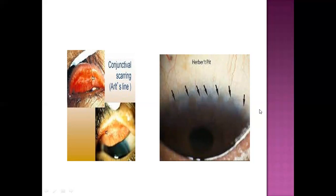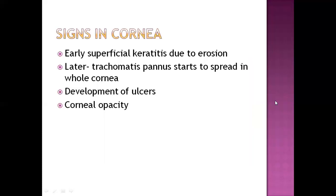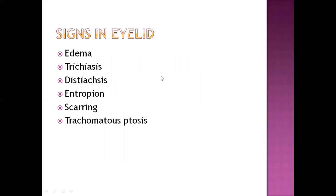Herbert's pits are small holes or pits visible on the limbus, and along with Arlt's line, they are characteristic features of trachoma. Signs in the cornea specifically: the cornea, conjunctiva, and eyelid suffer most in trachoma. Corneal signs include superficial keratitis, tissue erosion, and then trachomatous pannus spreading across the whole cornea, development of ulcers, and corneal opacity — cloudiness of the cornea.